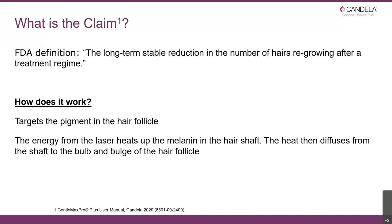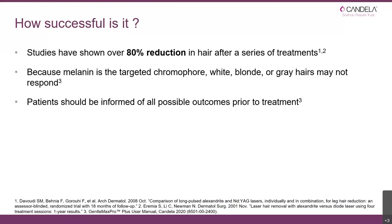The energy from the laser or light source is absorbed into the melanin within the hair, which heats it up. That heat then diffuses into the shaft, and we heat up both the bulb and the bulge, disrupting the blood supply and destroying the stem cells in the bulge area. Studies have shown we get over 80% reduction in regrowth after a series of treatments — typically three to four treatments — by which stage we're seeing 80% reduction. Carrying on with further treatments will produce even more reduction.